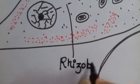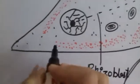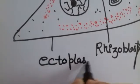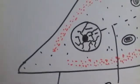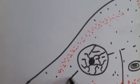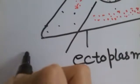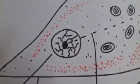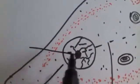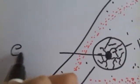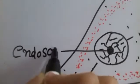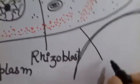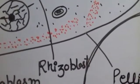Then there is inner part which is known as endoplasm. This is nucleus. The dark region was endoplasm. This layer which is the outermost layer is known as pellicle.